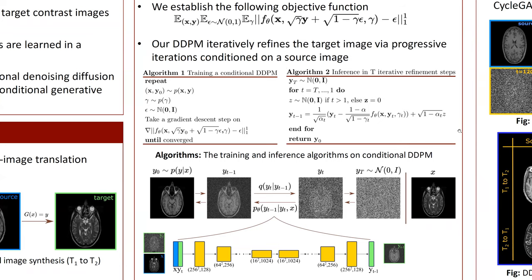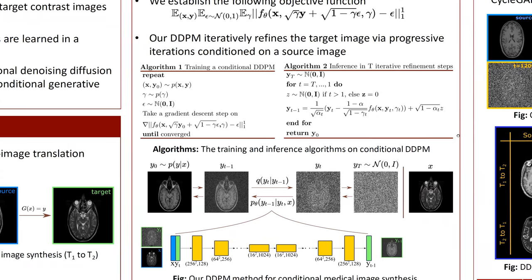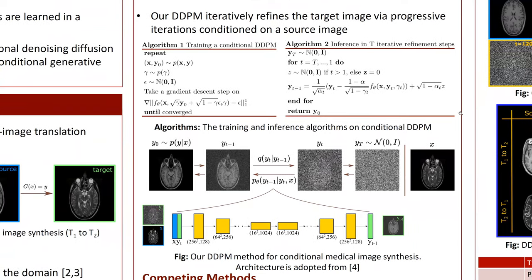For the inference in our network, we use the given algorithm 2 in T iterative refinement steps. As also seen in the figure below, our network at each iterative refinement step refines the image quality.